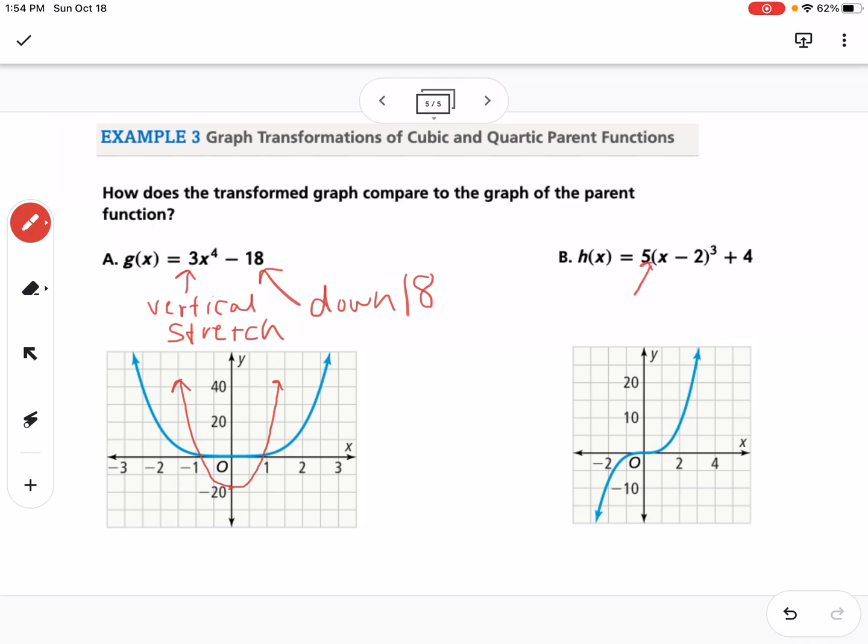This one over here, the 5 is going to be a vertical stretch. The minus 2 is going to go right 2 and the plus 4 is going to go up 4.